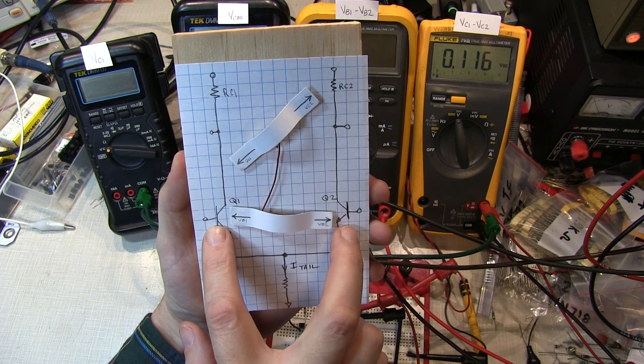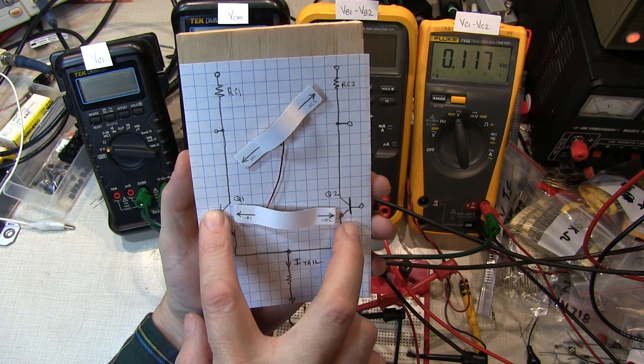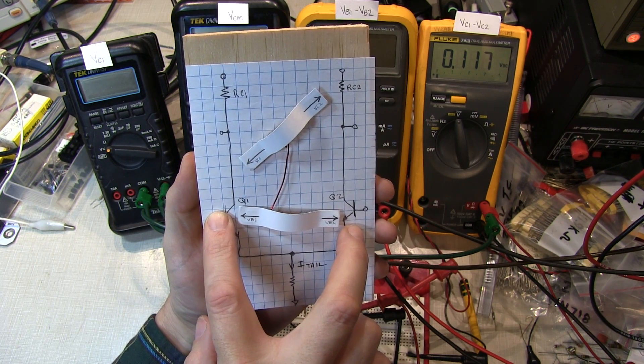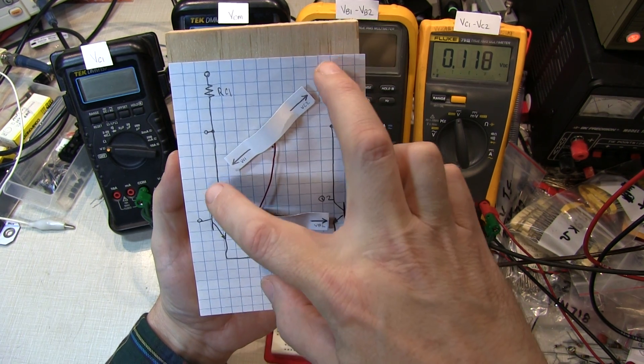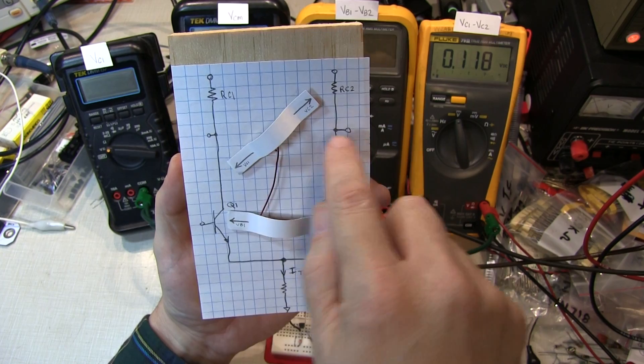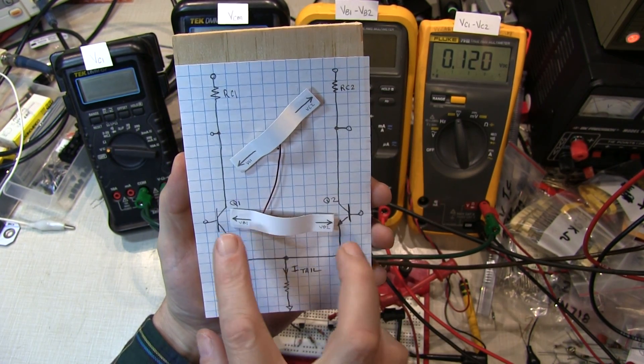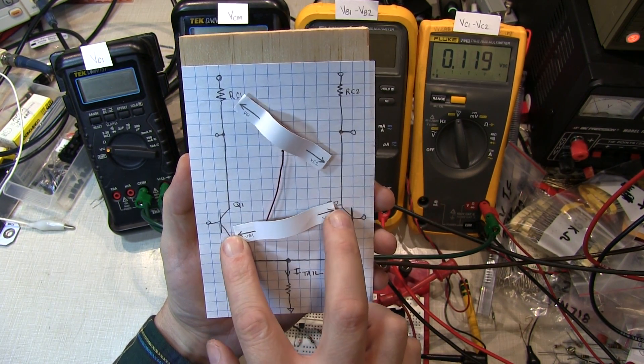And you can see that the circuit has gain. A small change in VB1 versus VB2 can mean a large change in the difference between Vout1 and Vout2. And the same holds true going in the other direction.